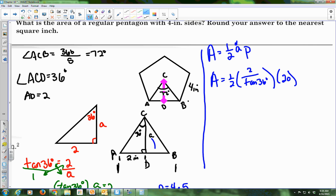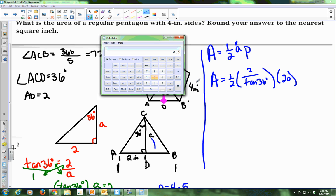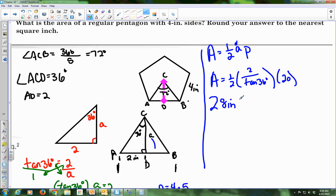Let me show you again how I'm putting this in my calculator. I go 0.5, which represents 1 half, times parenthesis, 2 divided by tan 36, close parenthesis, times 20. And I get 27.52. It wants us to round our answer to the nearest square inch, so that would be 28. And just to make sure we're on the right path, that is the correct answer.